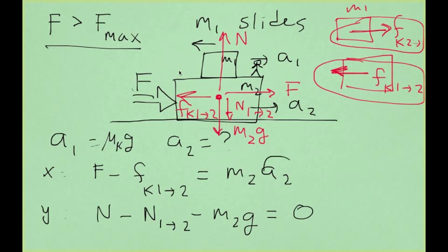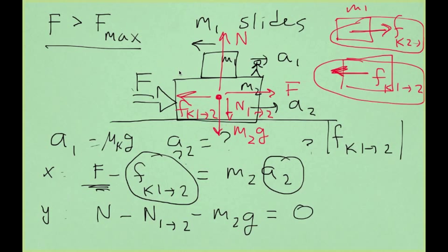Now to figure out the acceleration of block number 2, which is what we're looking for, we need to figure out what is the kinetic friction between 1 and 2. And this is where we use Newton's third law because the kinetic friction that 1 puts on 2 in magnitude should be equal to the kinetic friction that 2 puts on 1. What is the value of the kinetic friction that 2 puts on 1?